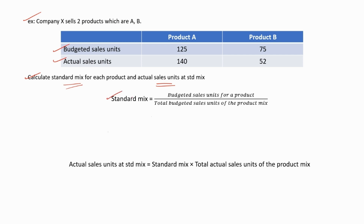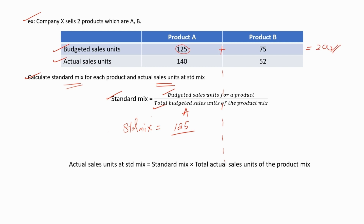Now let's calculate. The standard mix equals budgeted sales units for a product divided by the total budgeted sales units of the product mix. For product A: standard mix = 125 divided by (125 + 75) = 125/200. If the question asks for a percentage, multiply by 100%. For product B: standard mix = 75/200.